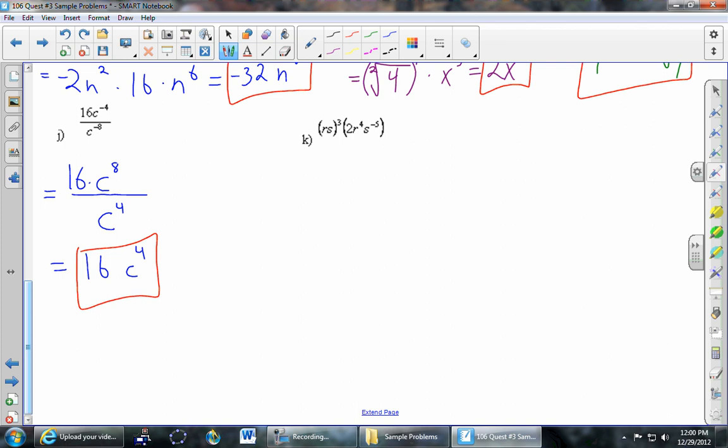Part K: R, S cubed times 2R to the 4th, S to the negative 5th. First, we'll bring that cubed into both of the pieces. So it's R cubed, S cubed. And then those parentheses aren't necessary. I'll just put a dot for multiplication and copy everything here. And then we'll bring the number in the front. So the 2 comes up here. We'll group the R's together. What do we do with those powers? We add them. 3 and 4 is 7. What do we do with these powers here? Well, we add those as well. 3 and negative 5 is negative 2, which is fine. But the directions said you're not allowed to have any negative exponents. So S to the negative 2, it's currently upstairs. It moves downstairs and becomes S to the positive 2.